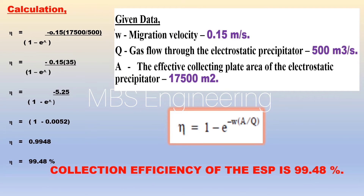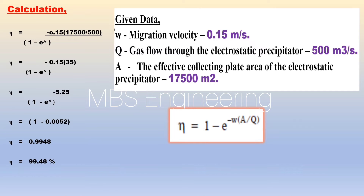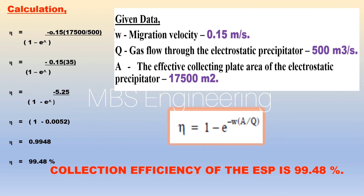Now we will calculate the collection efficiency of the electrostatic precipitator, ESP. The given data: omega — migration velocity is 0.15 meters per second. A — effective collecting plate area of the electrostatic precipitator is 17,500 square meters. Q — gas flow through the electrostatic precipitator is 500 cubic meters per second.